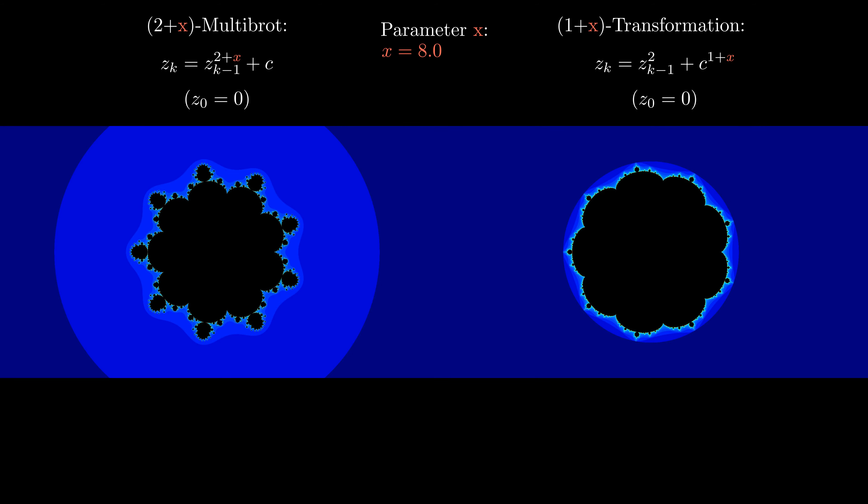They look surprisingly similar, yet they are not the same. Since we already discovered in a previous video, for integer values of X, the main shapes on the left are epicycloids, but the main shapes on the right are not epicycloids.